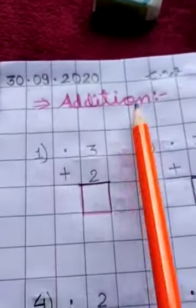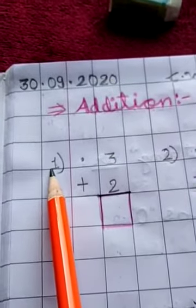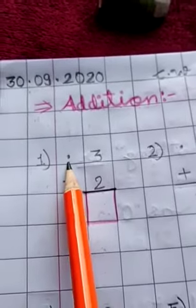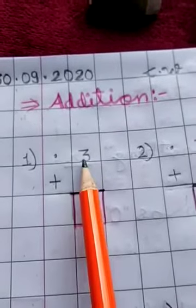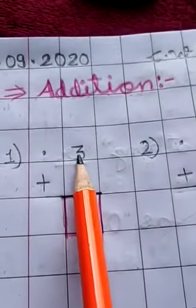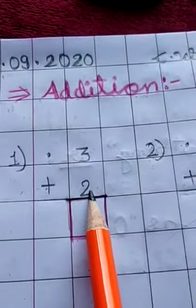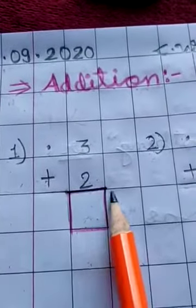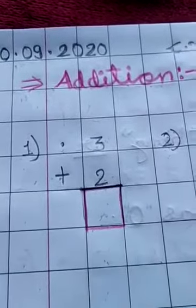Now leave this line. Write number 1 and do like this. Put a dot here and here write 3 plus 2. And draw a box with red pencil.